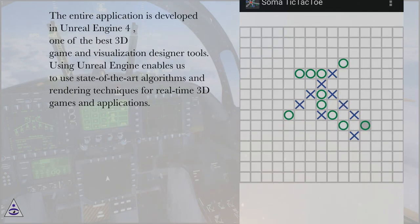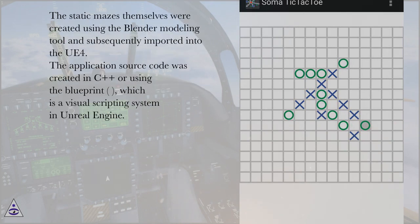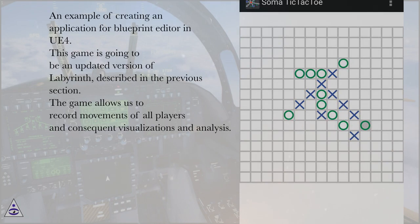The entire application is developed in Unreal Engine 4, one of the best 3D game and visualization designer tools. Using Unreal Engine enables us to use state-of-the-art algorithms and rendering techniques for real-time 3D games and applications. The static mazes themselves were created using the Blender modeling tool and subsequently imported into the UE4. The application source code was created in C++ or using the Blueprint, which is a visual scripting system in Unreal Engine. An example of creating an application for Blueprint Editor in UE4.